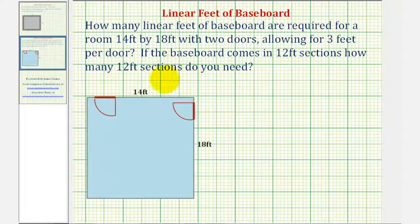Baseboard is wood that's laid between the base of the wall and the floor, so to find the number of linear feet needed, we'll first find the perimeter of the room, which would be the distance around the outside, highlighted here in orange.